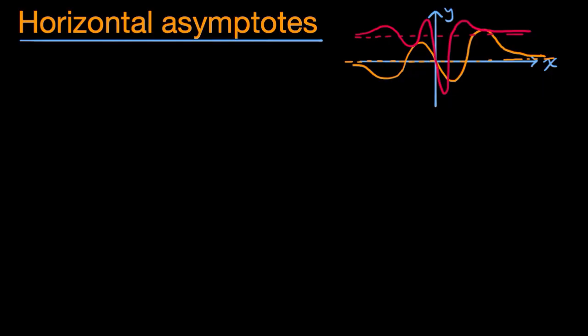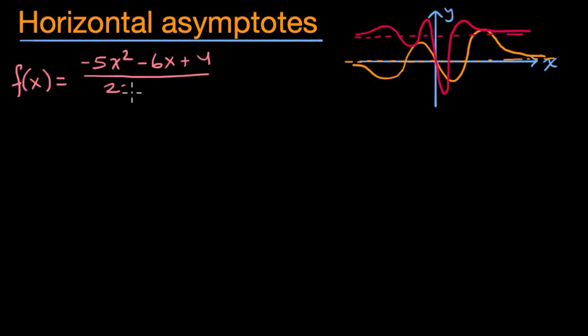Let's look at some examples where we're not looking at the graph, but just at the definition of the function, and see if we can figure out the horizontal asymptotes. So let's say we have f of x is equal to negative five x squared minus six x plus four, over two x squared plus eight. The key thing to realize is: what happens when x gets very positive or very negative? The terms that dominate are the highest-degree terms.